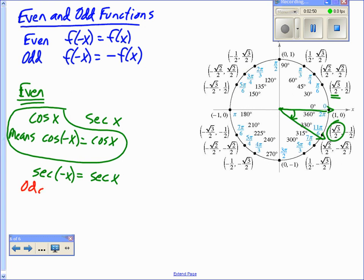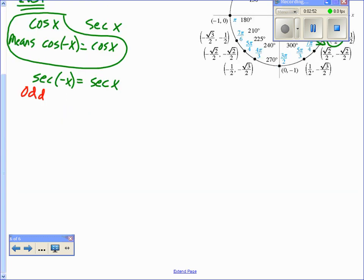Now our odd functions. The others are odd. Let me extend this a little bit. So my odd functions, the sine, the sine is odd. That means the sine of negative x is, guess what? Negative sine of x. And the tangent of negative x is negative tangent of x.